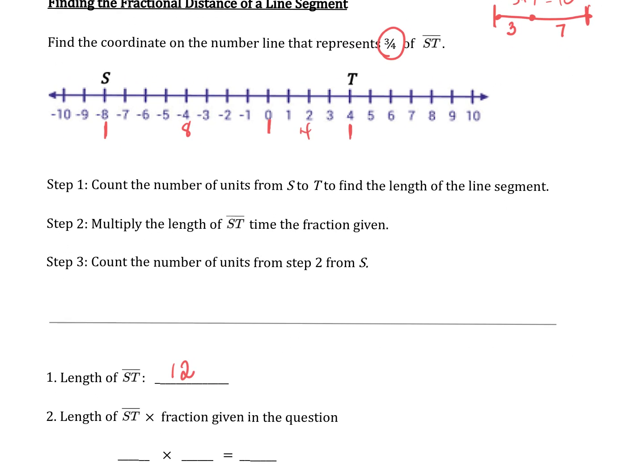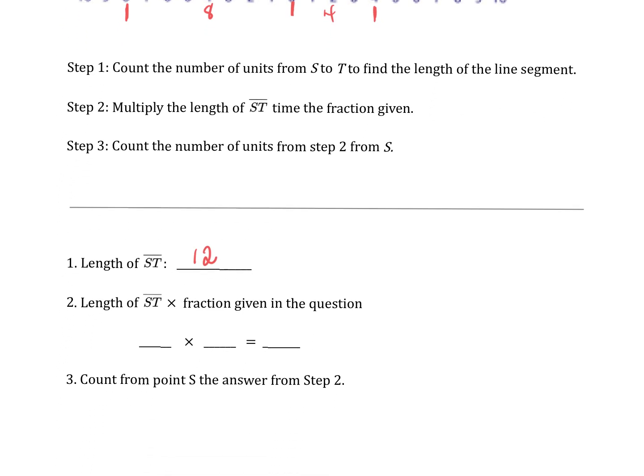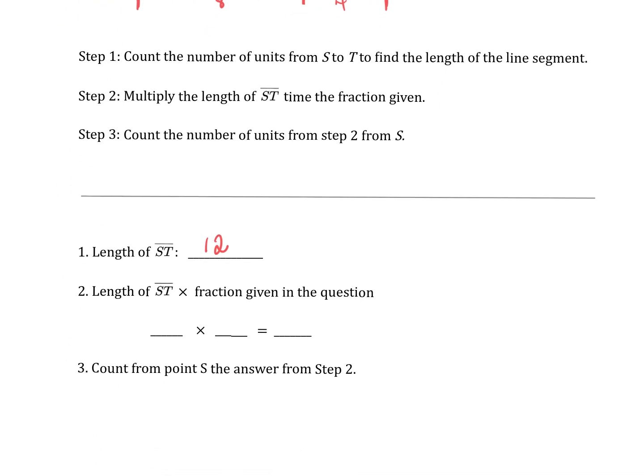The second thing we're going to do is we're going to multiply our total length, which we just determined as 12, by the fraction or the portion of the segment we're looking for. In this case, it happens to be 3 fourths. So I'm going to multiply. And any time we're looking for a portion of any total, we're going to multiply.